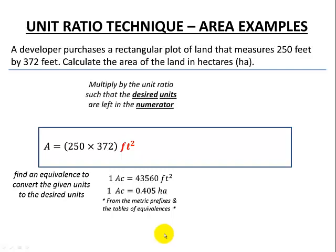Let's now multiply by unit ratios and recognize we're going to need both of these so that our desired units are left in the numerator. We first have to get rid of our feet squared, so we're going to use this top equivalence. Here's the unit ratio, the acres in the numerator, the feet squared in the denominator. Next unit ratio, from our equivalence, one acre is 0.405 hectares. Acres have to be in the denominator because they're in the numerator here, and we want them to cancel out to leave us just hectares.